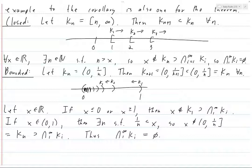This is interesting to think about — the different properties that sets and sequences of sets can have. But that's probably enough for now because we've finished the exercise. This shows us that we really do need these sets to be compact, or else we have counterexamples to the corollary and thus counterexamples to the theorem. So we're done.